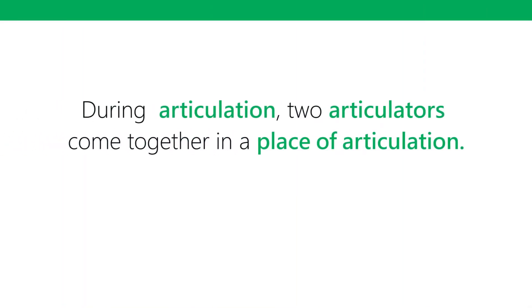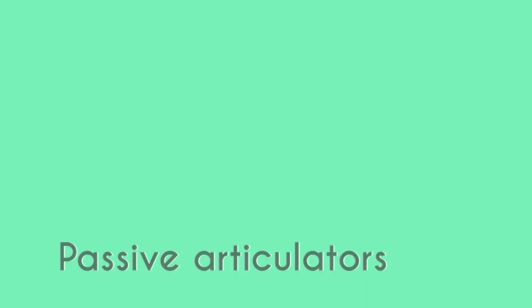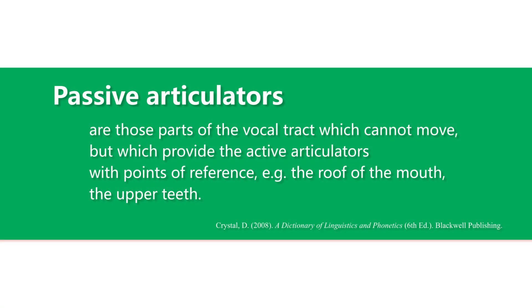At a place of articulation, two articulators come together, but it's actually one of them moving to the other — the other one stays in place, which is why it's called a passive articulator. Passive articulators are those parts of the vocal tract which cannot move but provide the active articulators with points of reference. Examples are the roof of the mouth and the upper teeth.